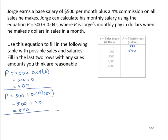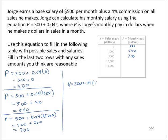If he makes $5,000 in sales, his pay would be 500 plus 0.04 times 5,000, which would be 500 plus 400, which is 900.